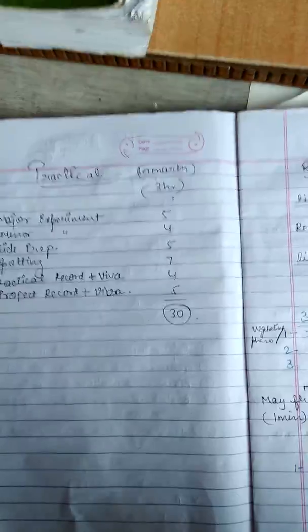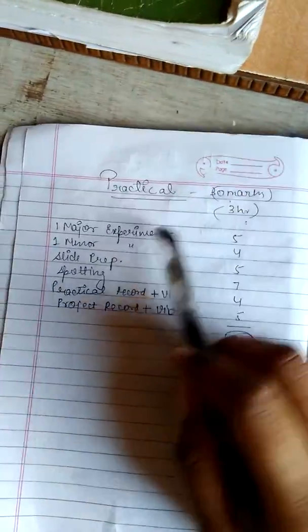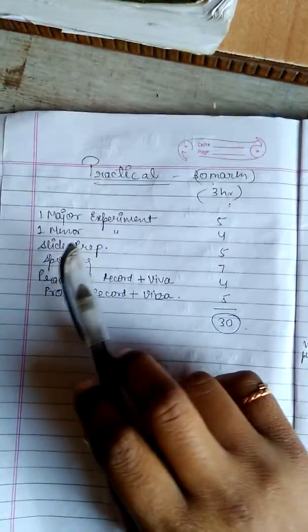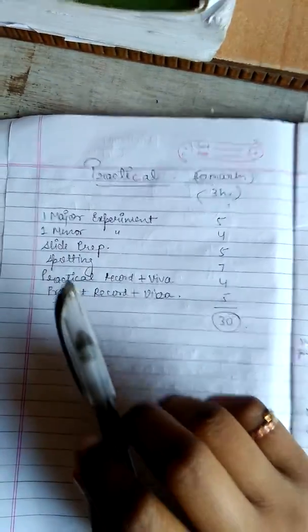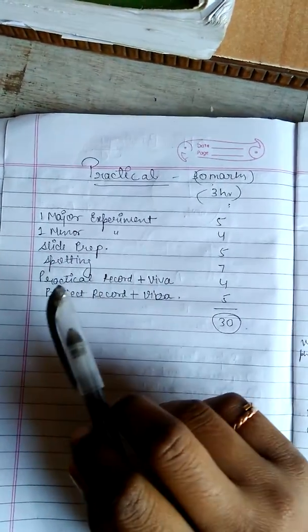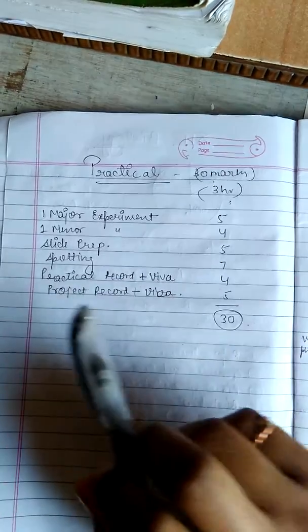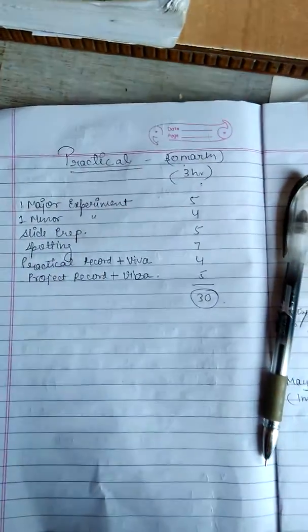And there is internal choice in the paper. These are practicals, practical 30 marks, paper 3 hours, 1 major experiment of 5 marks, 1 minor experiment of 4 marks, slide preparation, spotting, practical records plus viva of 4 marks, project records plus viva of 3 marks.